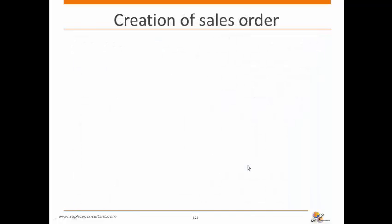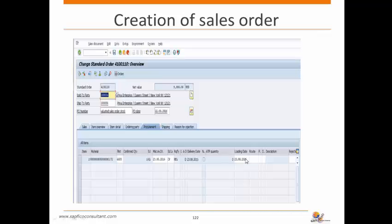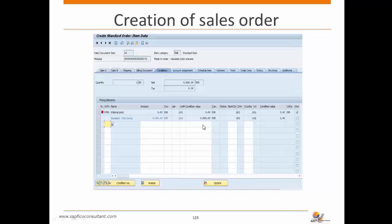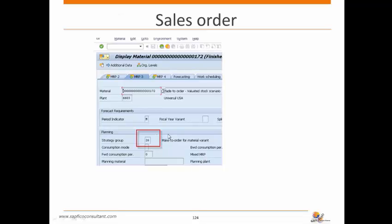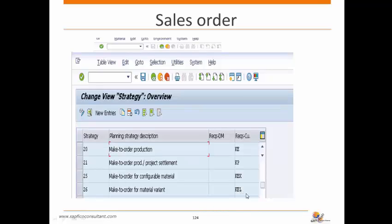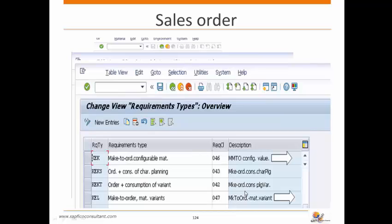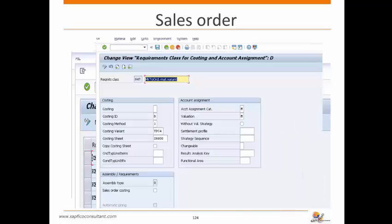Since there is no standard cost estimate, we proceed to create the sales order. In the sales order, requirement type KEL is determined based on strategy group 26. The VPRS condition value is zero because the material master has no standard price. Strategy group 26 is assigned to requirement type KEL, and KEL is internally assigned to requirement class 47 for make-to-order material variant.